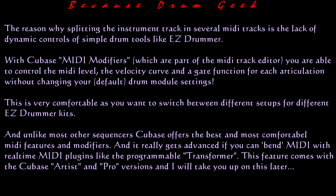This is very comfortable, as you want to switch between different setups for different EZ Drummer kits. And unlike most other sequencers, Cubase offers the best and most comfortable MIDI features and modifiers. It really gets advanced when you combine MIDI with real-time MIDI plugins like the programmable transformer. This feature comes with the Cubase Artist and Pro versions, and I will take you up on this later.